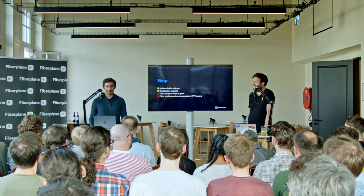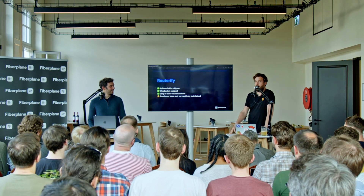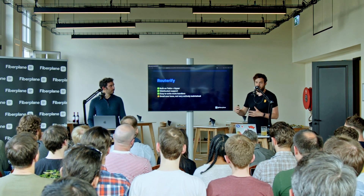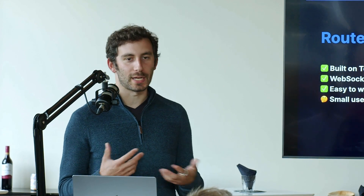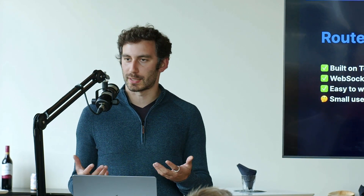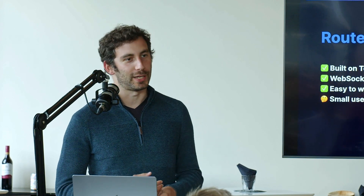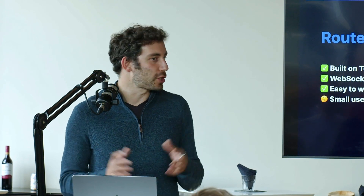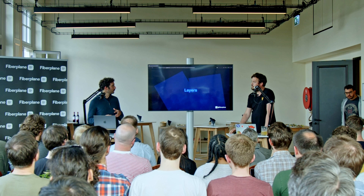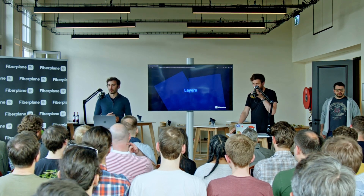We ended up with Routerify, a simple router built on top of Tokio and Hyper. It was pretty decent — defining your routes is very easy. But we found there wasn't a lot of traction; not many people were using it. It's not the most widely used framework, but it's nice and simple, easy to create routes, and doesn't give you the confusing errors I was describing. So it wasn't the most popular project, but it was a fine choice.